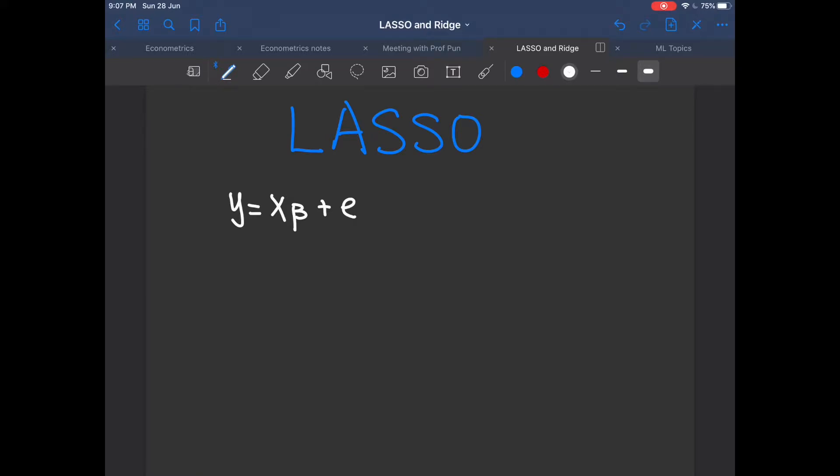The least square model estimator beta hat then minimizes the sum of the squares of the error term, which can be written as e transpose e. And since e is unobservable, we replace e with an estimator e hat. So now we have e hat transpose e hat.